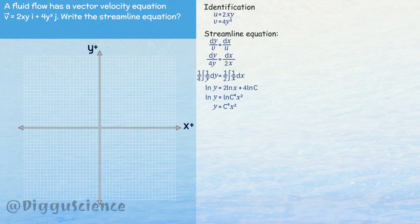We can sketch the streamline by replacing the value of c with an integer. Here is the streamline for c equals 1, the streamline for c equals 2, and so on. Hope it is useful and don't forget to watch the next video.